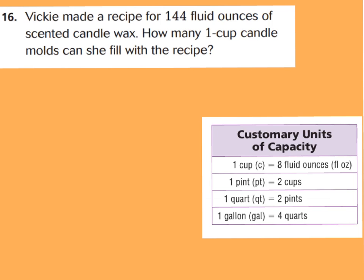For number 16 at the bottom of the page: Vicki made a recipe for 144 fluid ounces of scented candle wax. How many 1-cup candle molds can she fill? We're going from ounces to cups — small to larger — so we divide. There are 8 ounces in 1 cup, so our division is 144 divided by 8.